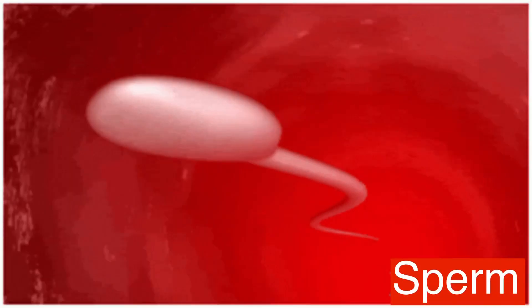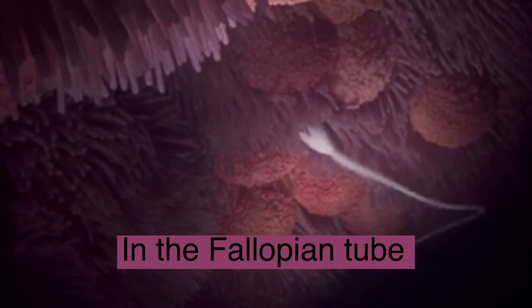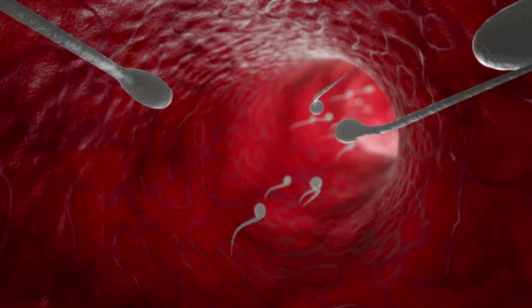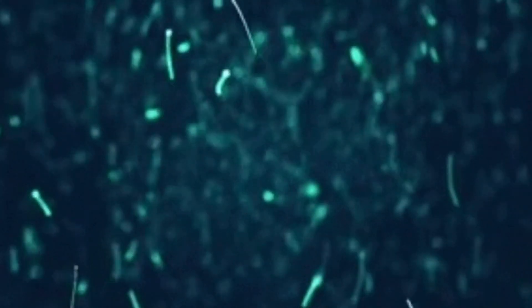Because a woman has two fallopian tubes, half of the surviving sperm cells will swim into an empty fallopian tube. The remaining half will swim into the fallopian tube that contains the unfertilized egg. At this point, only a few thousand sperm remains.